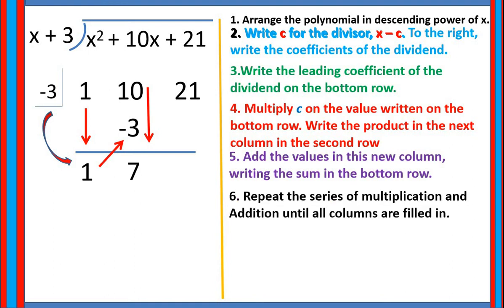Next, repeat the series of multiplication and addition until all columns are filled in. We multiply c by the number in the bottom row: negative 3 times 7 equals negative 21, placed in the next column. Then add 21 plus negative 21, which equals 0.